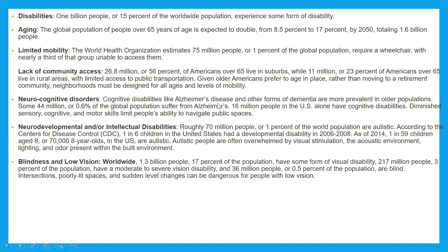On blindness and low vision worldwide: 1.6 billion people, or 17% of the population, have some form of visual disability. 217 million people, or 3% of the population, have a moderate to severe vision disability, and 36 million people, or 0.5% of the population, are blind. Intersections, poorly lit spaces, and sudden level changes can be dangerous for people with low vision.